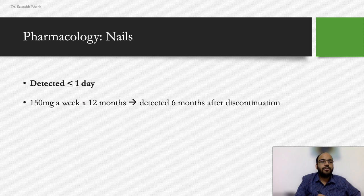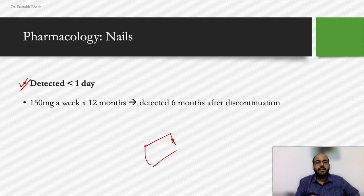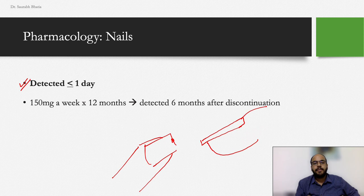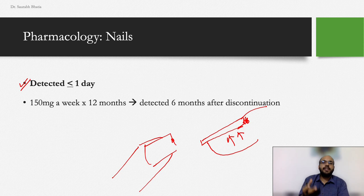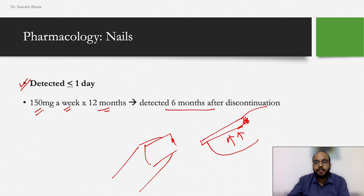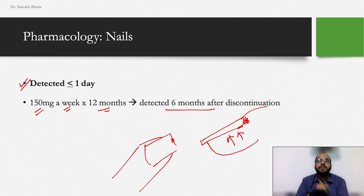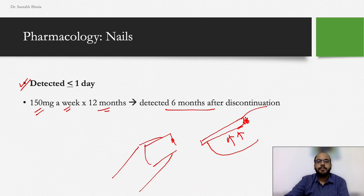In nails, fluconazole has been detected within one day, even at the distal point of the nail, meaning diffusion occurs through the nail bed, nail matrix, and nail folds. Using a 150 mg weekly bolus for 12 months, fluconazole is detectable even six months after stopping treatment. For onychomycosis caused by candidal species, fluconazole is the drug of choice. If a dermatophyte infection is suspected, consider terbinafine or itraconazole instead.